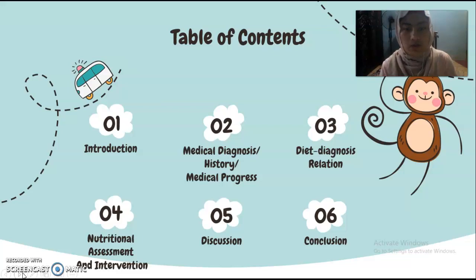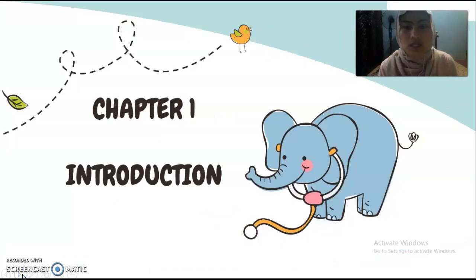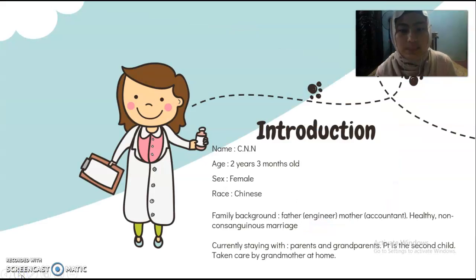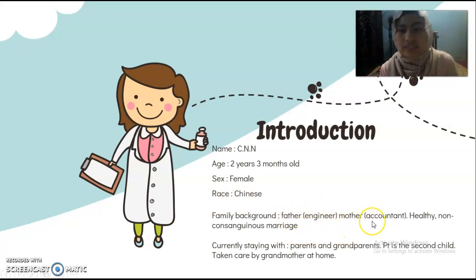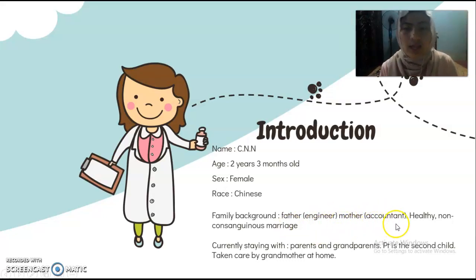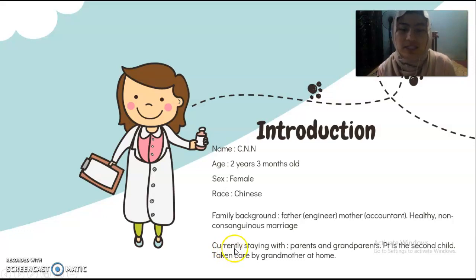Here is the table of contents of my case study. For the introduction, this patient's name is PNN. She is 2 years and 3 months old, female, and her race is Chinese. Her father works as an engineer, her mother is an accountant, and both of her parents are healthy. They came from a non-consanguineous marriage. This patient currently stays with her parents and grandparents and she is the second child in her family.